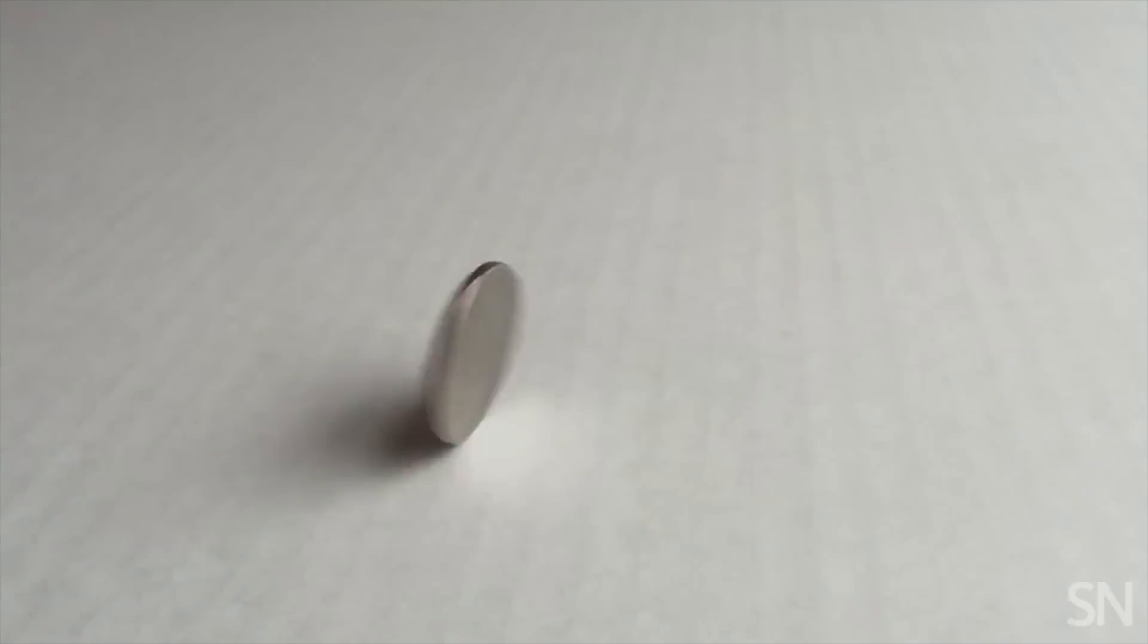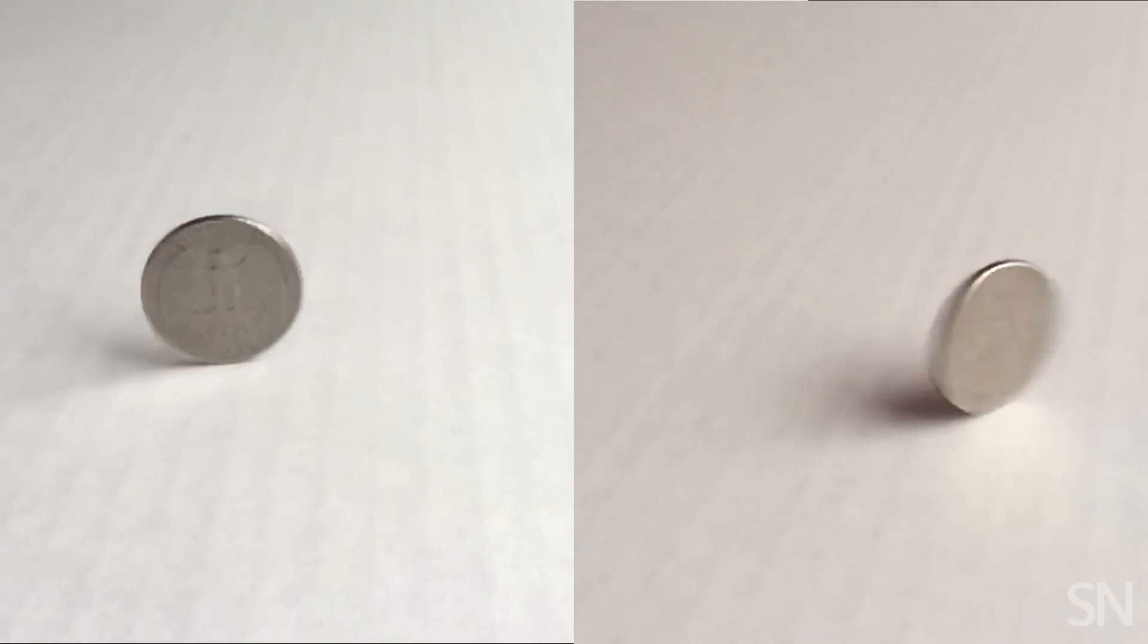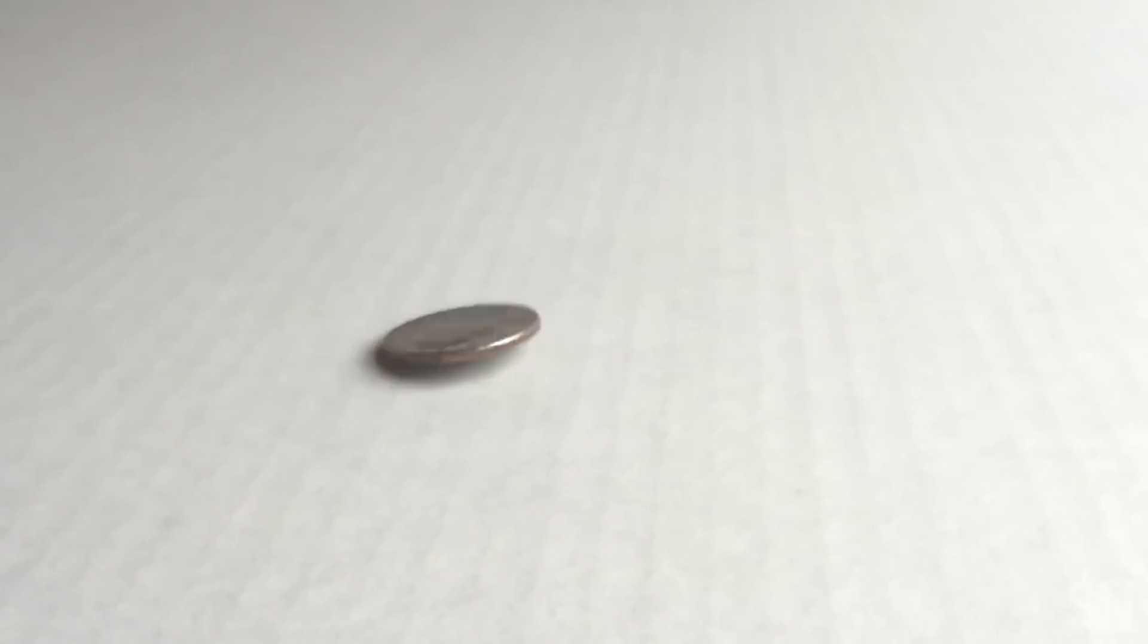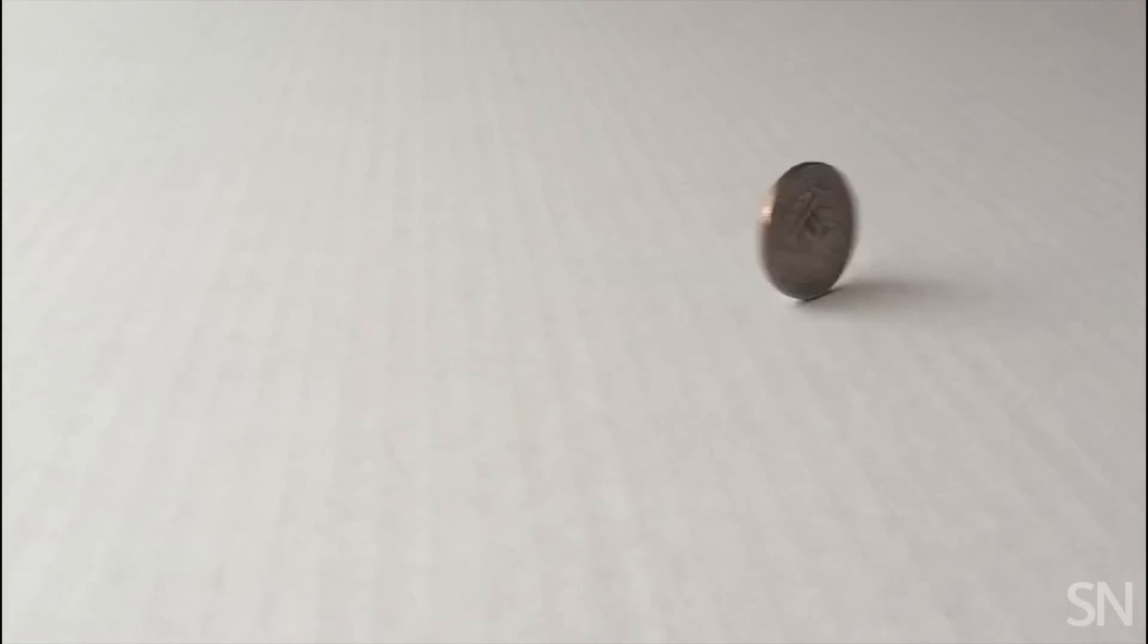Now, let's assume these coins become entangled. They're still spinning. Finally, one lands. You see that it's heads. Now, you know that the other coin, whenever it lands, will be tails. Guaranteed.